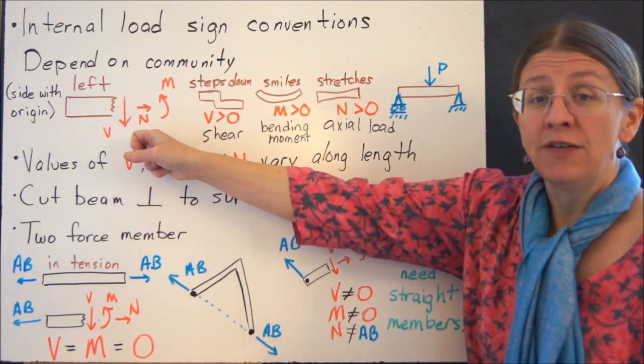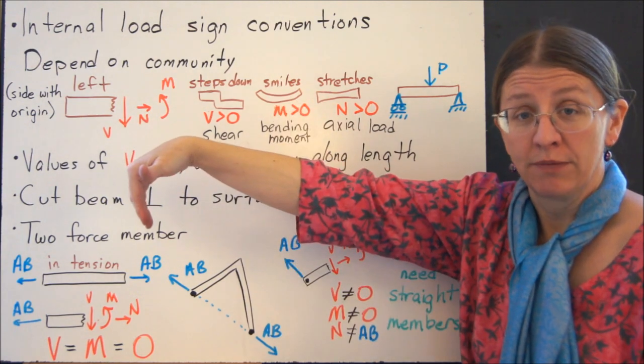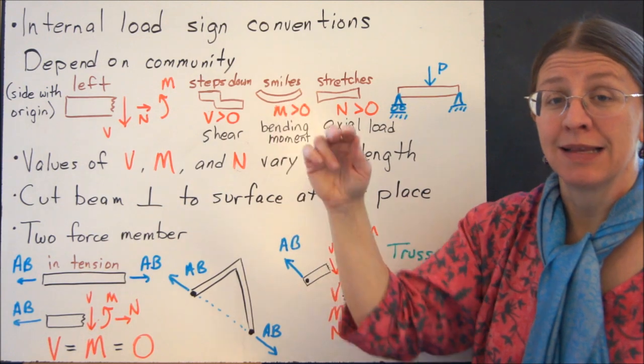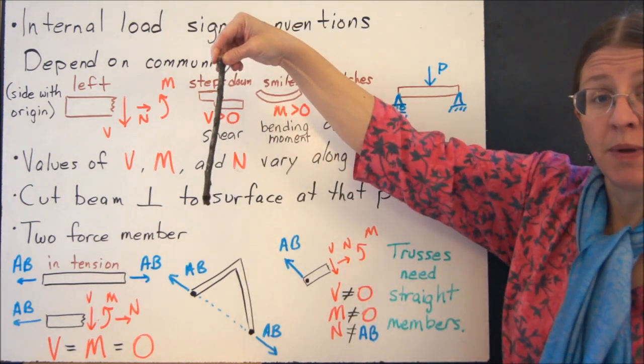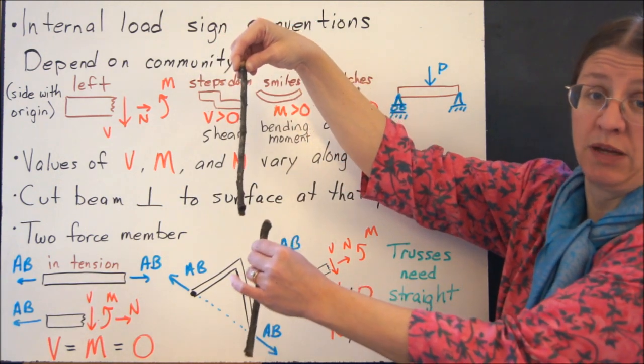V on the left-hand side of the beam, V goes down, N goes to the right, and M goes that way, counter-clockwise. That left here means the side with the origin. So if you have a vertical beam and my origin is at the top, then that's the left-hand side of the beam. And this would be the right-hand side of the beam, even though it's top and bottom.